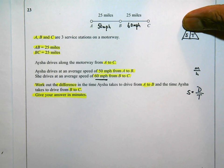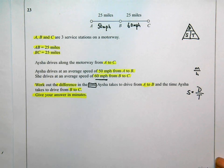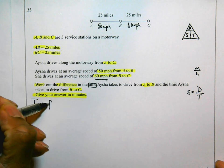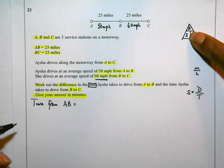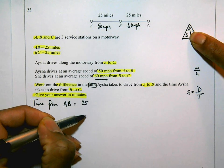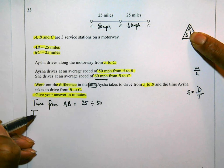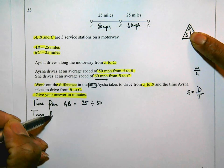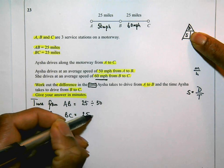In this question, we need to work out the difference in times. So I'll calculate the time from A to B and the time from B to C separately. To find time, I cover up T in the triangle, giving time equals distance divided by speed. For A to B: distance is 25 miles, speed is 50 miles per hour. For B to C: distance is also 25 miles, speed is 60 miles per hour.